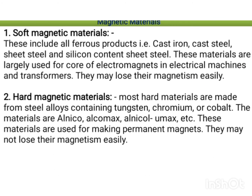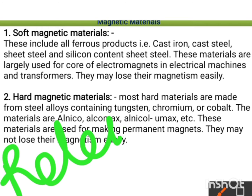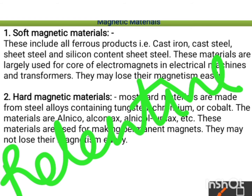Hard magnetic materials are mostly made up of steel alloys containing tungsten, chromium, or cobalt. Examples include Alnico, Alchomax, Alkenol, and Unimax. These materials are used for making permanent magnets because they do not lose their magnetism easily. Hard magnets are retentive and can form permanent magnets — they retain the magnetic field even when the external applied field is zero or removed.